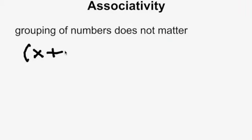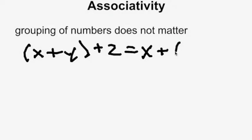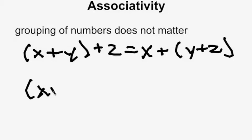The next property is associativity. Associativity states that the grouping of numbers does not matter. This applies when there are three or more elements. For addition: (x plus y) plus z equals x plus (y plus z). For multiplication: (x times y) times z equals x times (y times z). Where the parentheses are does not affect the outcome.